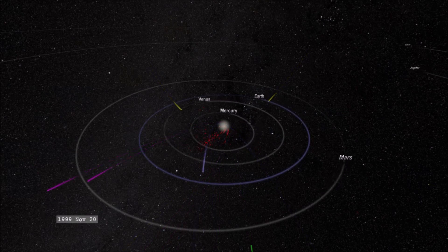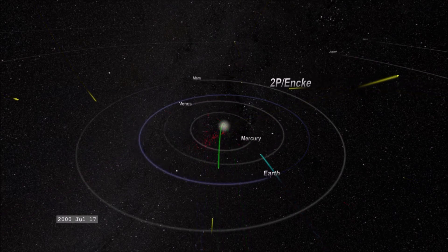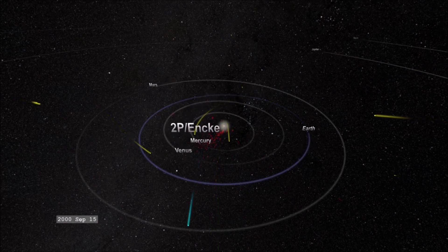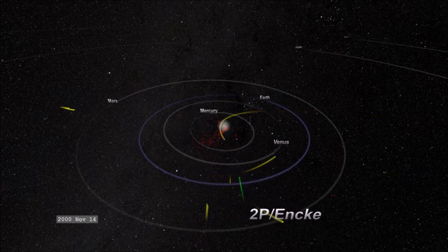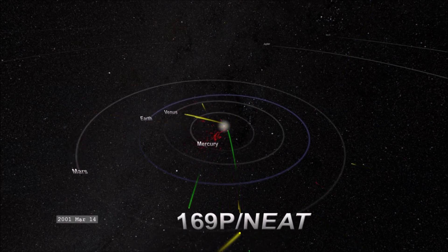Periodic, or short period comets are comets that orbit the sun in less than 200 years. Comets with orbits of 200 years to 1000 years in length are called long-term comets. And comets that take more than 1000 years to orbit the sun are called near-parabolic comets.